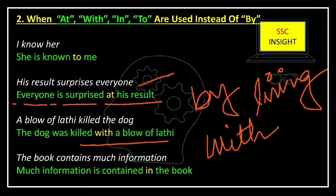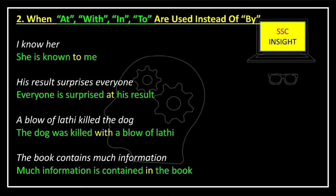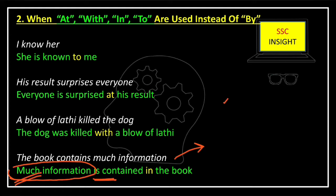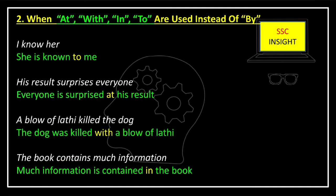The next example: 'The book contains much information' — its passive voice will be 'Much information is contained in the book.' Here we use 'is' with 'much information' because information is an uncountable noun, and with uncountable nouns we use a singular verb, that is 'is.' That's why the passive voice is 'Much information is contained in the book.'